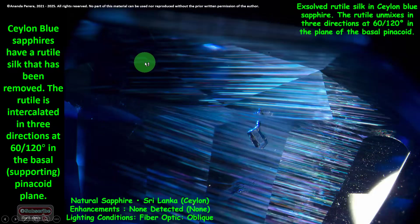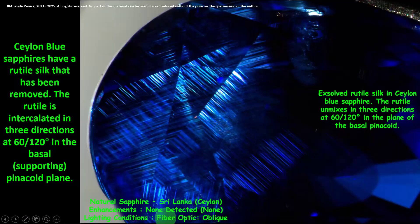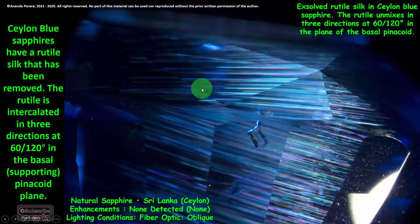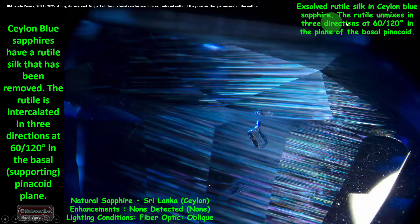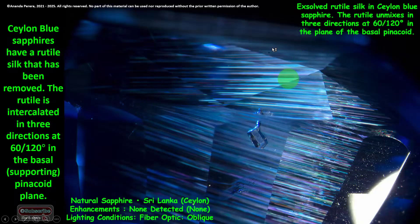Now here is another photo. The lighting condition here is fiber optic oblique, same as before. You can see the 60 and 120 degree angles in the basal pinacoid plane. These are also rutile silks — exsolved rutile silks in Ceylon blue sapphire. The rutile unmixes in three directions at 60 and 120 degrees in the plane of the basal pinacoid.